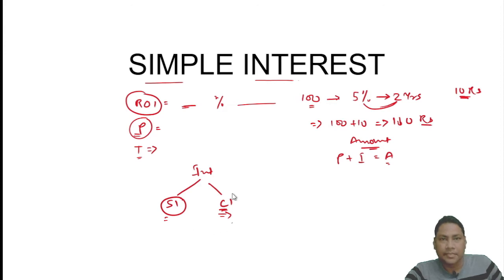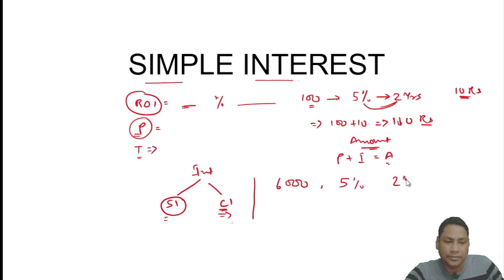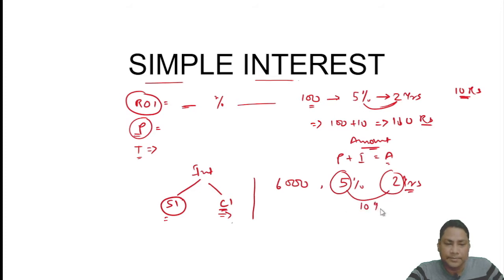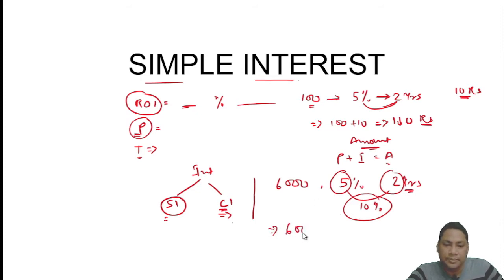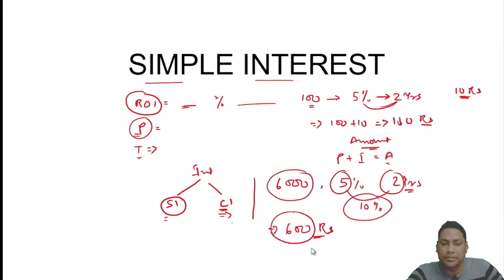Let us take another example. If anybody has invested 6000 rupees at the rate of interest of 5 percent for two years, the interest will become 10 percent of 6000, which is 600 rupees. He will have to return not only the 600 rupees interest but also the principal of 6000. The total amount he will get or return is 6000 plus 600, that is 6600 rupees.